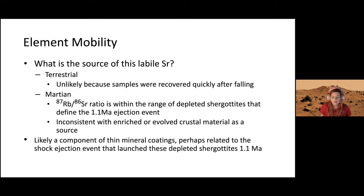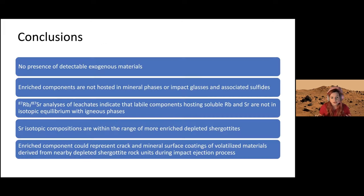What we hypothesize is that perhaps these leachates represent some sort of coating, probably a volatile coating related to these launch paired depleted shergotites that were ejected 1.1 million years ago. In conclusion, we didn't find any presence of exogenous materials. There were no enriched components hosted in any mineral phases. The rubidium-strontium analysis showed these leachates and residues weren't in equilibrium, and these leachates are within the range of other depleted shergotites—nothing terrestrial. Our overarching hypothesis is that this represents coatings from volatilized materials from nearby shergotites upon that impact ejection process. That's all I have if there's any questions.